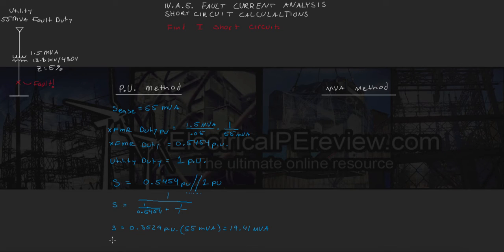we know that our current is equal to S over square root 3 times our line voltage. So this is going to equal 19.41 MVA divided by square root 3 times 480 V. This is going to give us a total current of 22.35 kA, or 22,000 A.